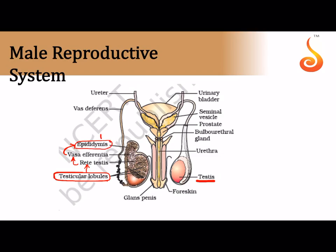The epididymis continues into the vas deferens, which ascends through the inguinal canal and up through the pelvic cavity in front of the urinary bladder. It takes a turn, loops over the bladder, and comes to lie behind the urinary bladder, where it unites with the duct of the seminal vesicle to form the ejaculatory duct. The ejaculatory duct joins the urethra.